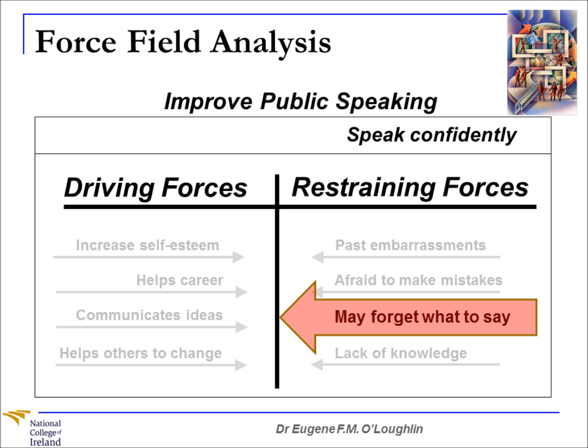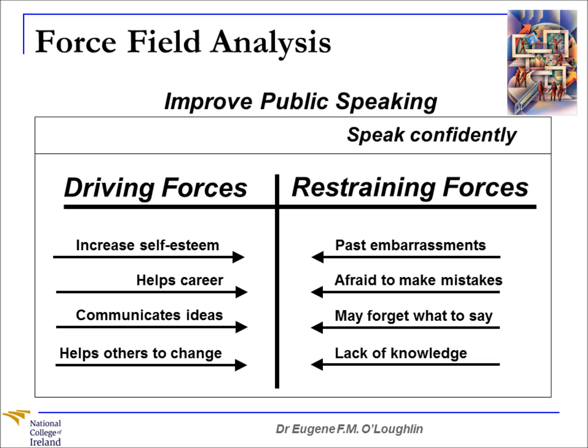We then hone in and concentrate on the individual items that have been selected. One of the restraining forces is that a person may forget what to say — that's preventing somebody from speaking confidently. But it is relatively straightforward to overcome. For example, you might use index cards for someone to write down notes, or use PowerPoint or bullet points to help somebody get over the fear of forgetting what to say. You can also think about other ways of overcoming these restraining forces, or enhancing the driving forces on the left-hand side, generating many ideas to improve the driving forces and eliminate or reduce the restraining forces.